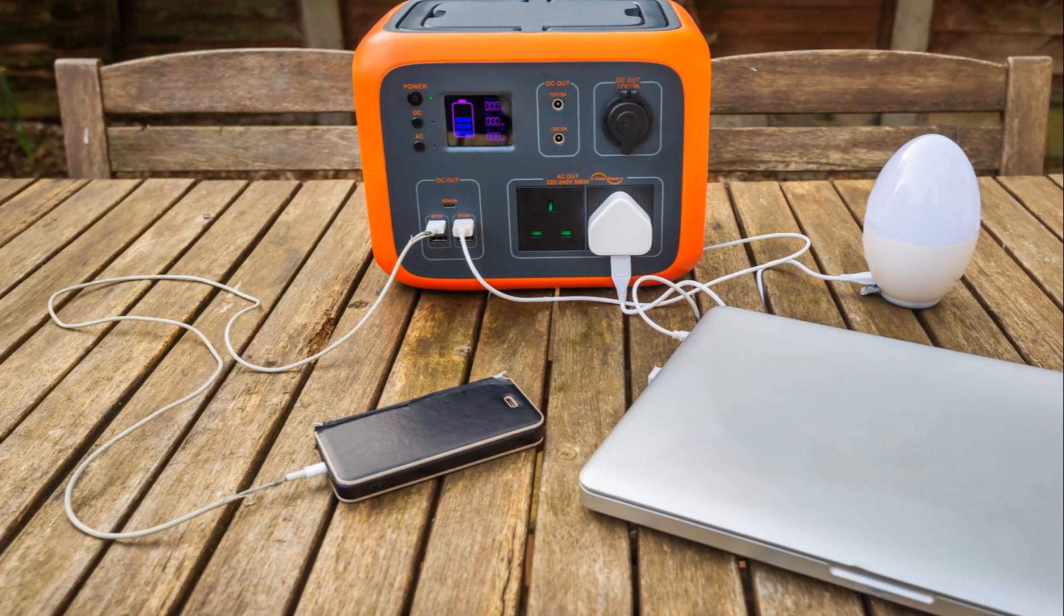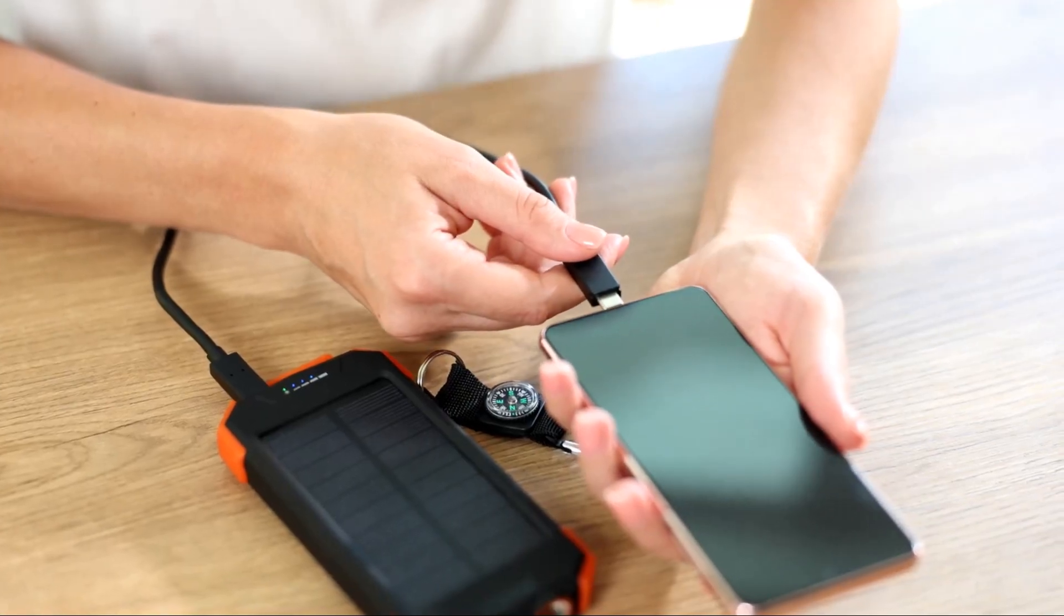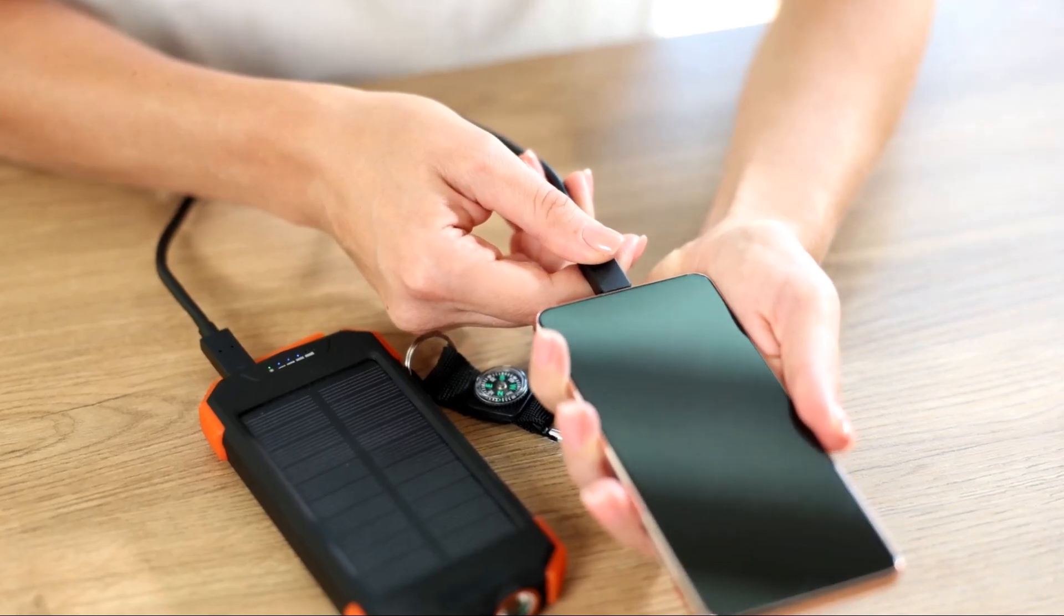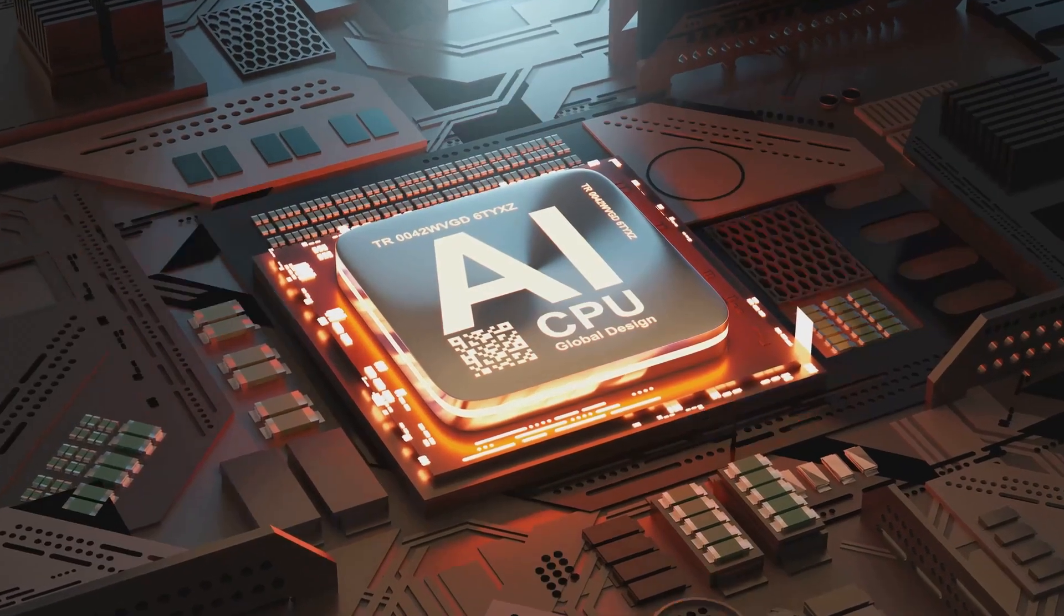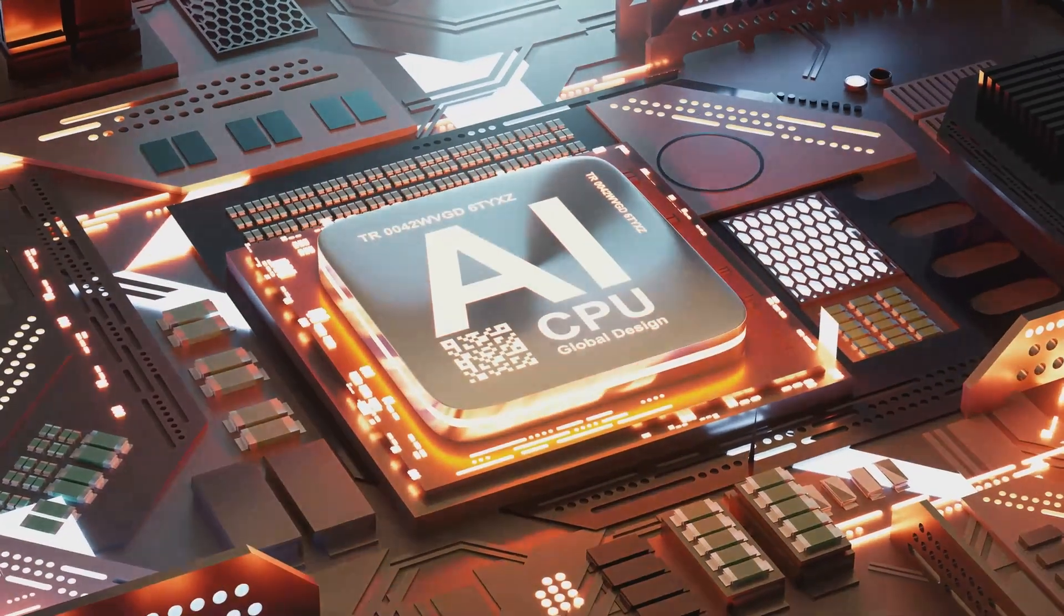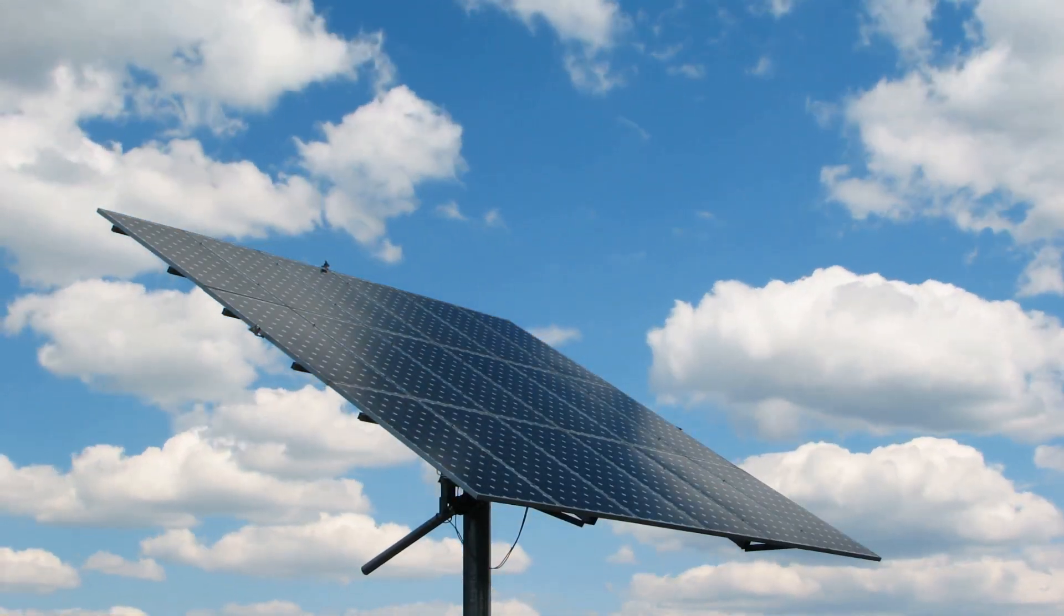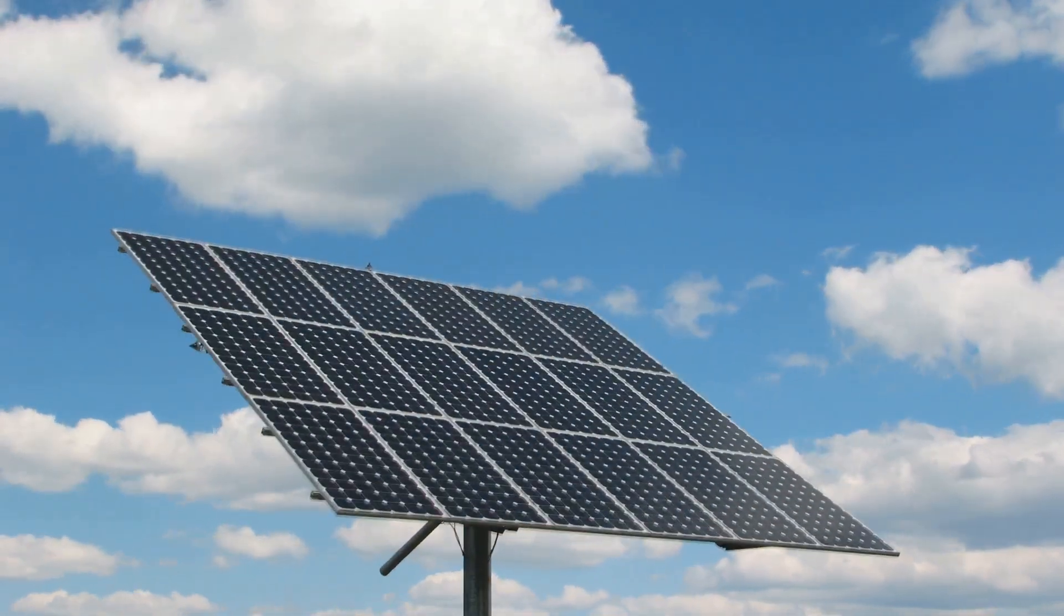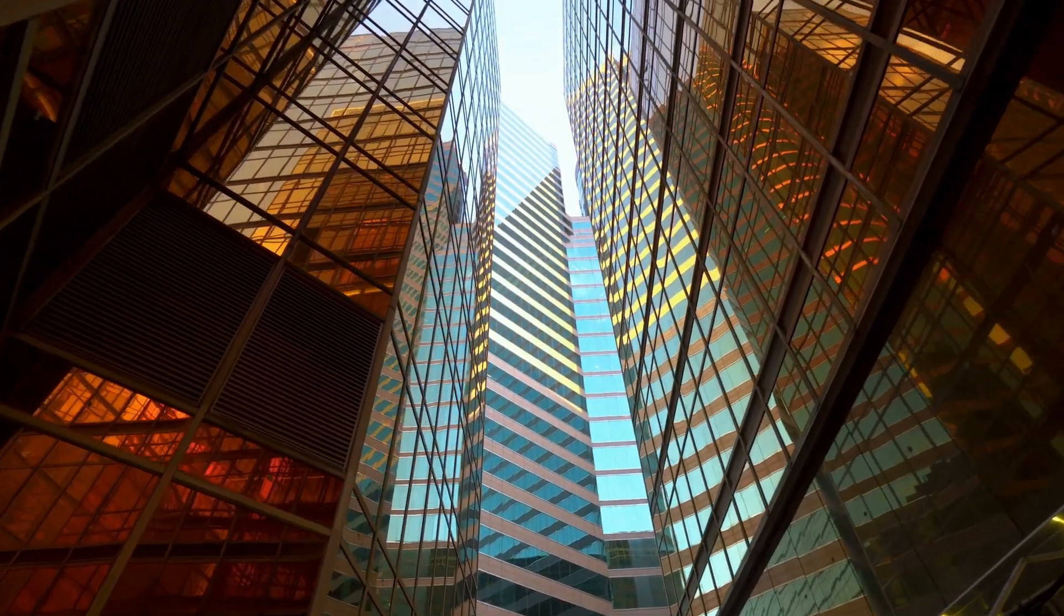This means that they can be used in a variety of applications, from rooftop panels to portable chargers, bringing solar power to places it's never been before. Next, we have AI optimization. Artificial intelligence is being harnessed to maximize the output of solar installations. By analyzing weather patterns and adjusting panel angles to best capture the sun's rays, AI systems are ensuring that solar arrays operate at peak efficiency.